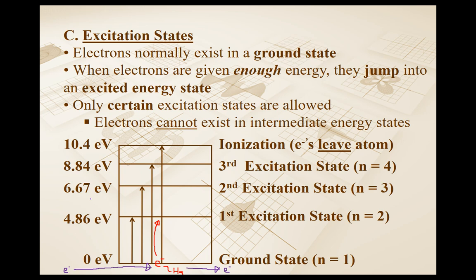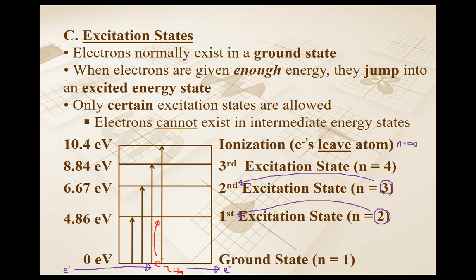Eventually you get to the point where we have something called ionization. Ionization is when the incoming electron transfers so much energy to the mercury electron that it actually has enough energy to leave the atom entirely, turning the atom into an ion. The ionization state, if we used an N value, would be like infinity. You'll notice there's a bit of confusion between the N values — N equals 2 is the first excitation state. We'll readdress this in the next lesson and rename them stationary states.